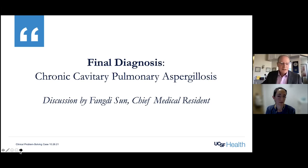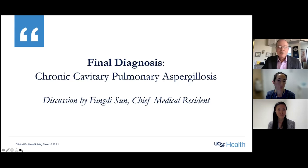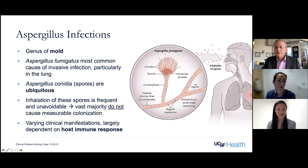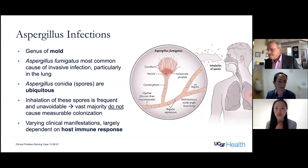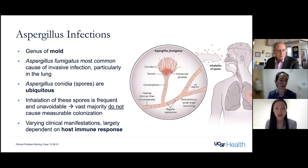When a combined surgical-medical approach was preferred, the patient was thought to be too frail to tolerate major thoracic surgery. He continued to receive azole treatment and is pending follow-up imaging, with recognition that medical therapy alone is insufficient. The final diagnosis is chronic cavitary pulmonary aspergillosis. Wachter brings on Feng Di Sun, the chief medical resident who prepared the case, to review the entity. He notes that Aspergillus is a relatively hardy fungus that grows as a mold — Aspergillus fumigatus is the most common cause of invasive infection, specifically infection of the lung.